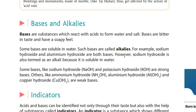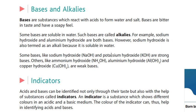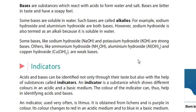On the other hand, ammonium hydroxide, aluminium hydroxide, and copper hydroxide are weak bases. Oxides or hydroxides of metals are called bases, in which sodium hydroxide and potassium hydroxide are strong bases, while ammonium hydroxide, aluminium hydroxide, and copper hydroxide are weak bases.